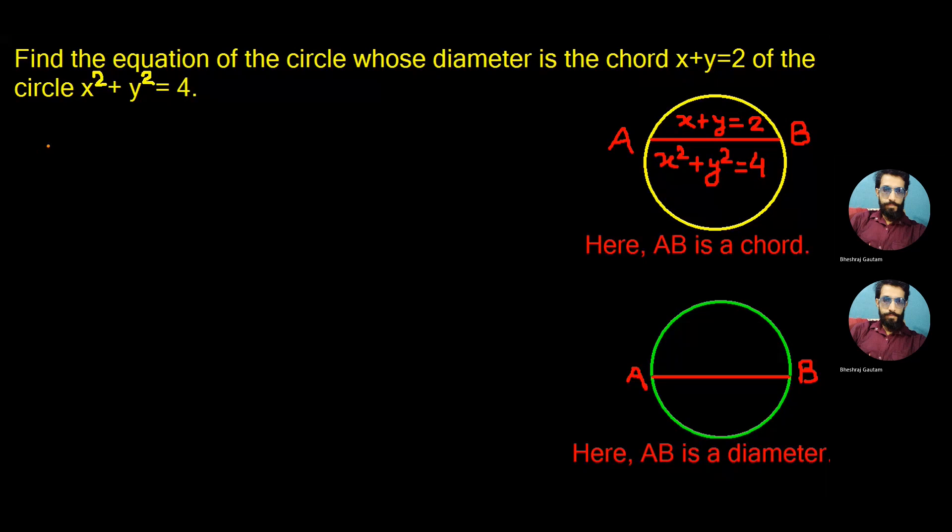Namaste. In today's question, we are expected to find the equation of the circle if its diameter is the chord of another circle with the equation x² + y² = 4. The equation of the chord is also given as x + y = 2.